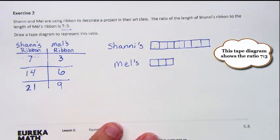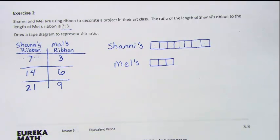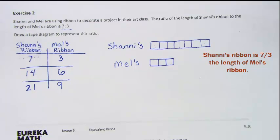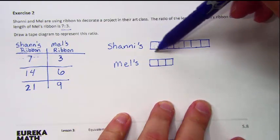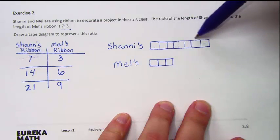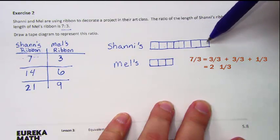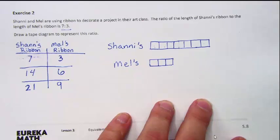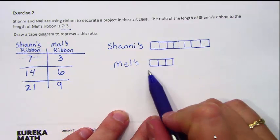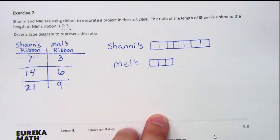We can look and see that Shawnee's ribbon is 7 thirds the length of Mel's ribbon. If we take the length of Mel's ribbon and multiply it by 7 thirds, that's 2 and 1 third. You can see that if we look at groups of 3: there's 1 group of 3, a 2nd group of 3, and 1 out of 3 in the next group — so that's 2 and 1 third. So now that we have a tape diagram, we can use this to determine our actual units.